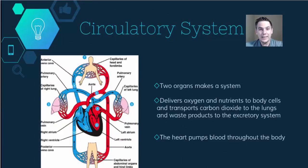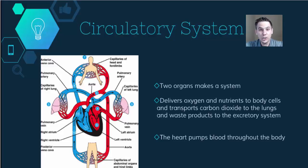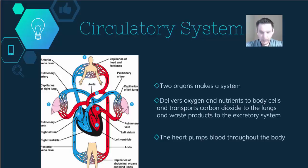The circulatory system is very closely related to the respiratory system. The respiratory system helps get gases in and out of your body, but those gases need to circulate throughout the rest of your body — oxygen needs to go everywhere. The circulatory system takes the gases that the respiratory system brings in and gets them to all the parts of your body that the respiratory system doesn't reach. It delivers oxygen and nutrients to all body cells, and transports carbon dioxide to the lungs and waste products to the excretory system.